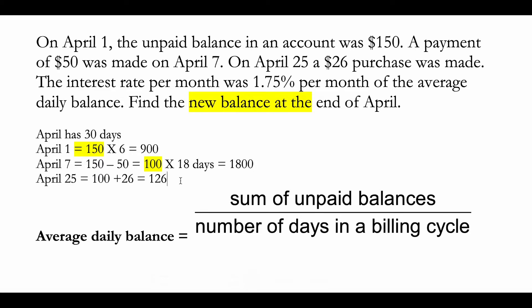On April 25th, a $26 purchase was made. At the end of the day, your account showed a balance of $126. Since April has 30 days, you count from April 25th until April 30th — that's six days. So we multiply 126 by 6, which gives $756.